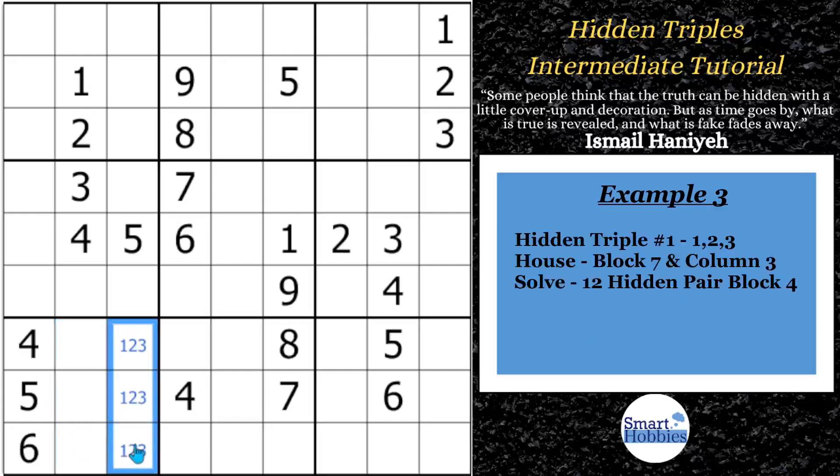And so what you end up having is a 1, 2, 3 hidden triple. Because you thought you might be able to put other candidates in here, like a 9 could go in there. Well, it can't because the 1, 2, and 3 have to fit in those three cells. And so once you have the hidden triple right there, whatever's left ends up being a naked triple.